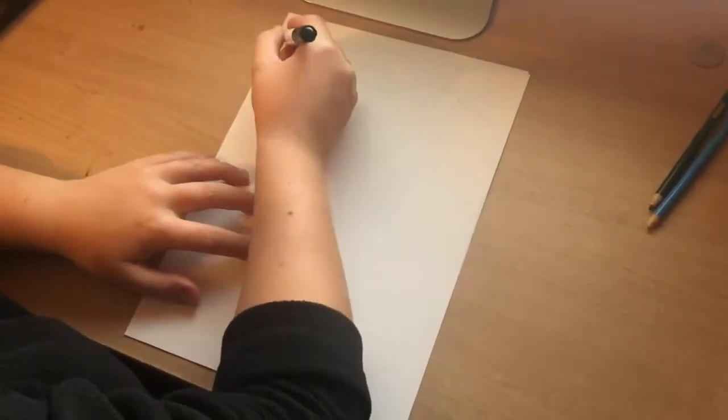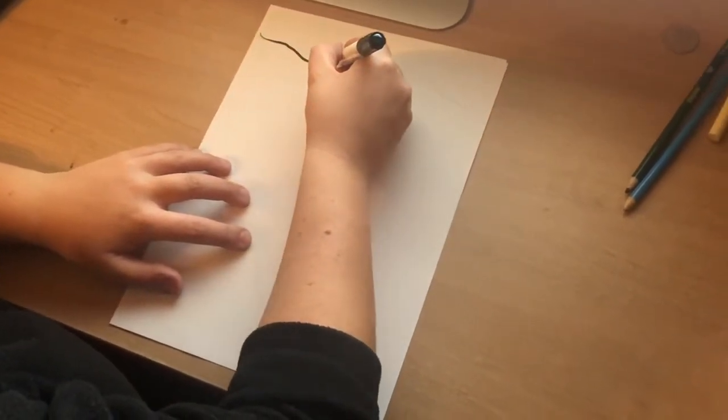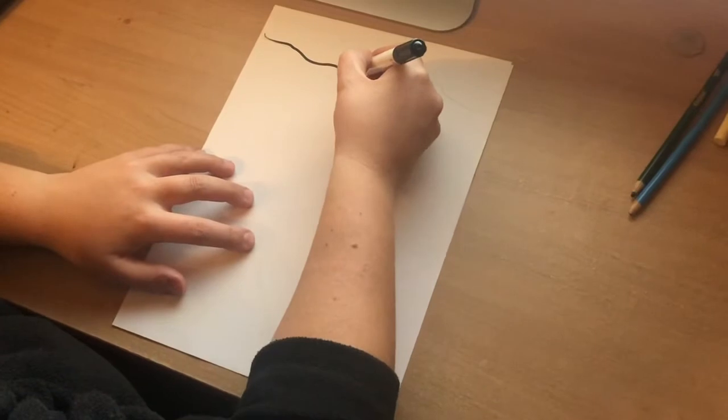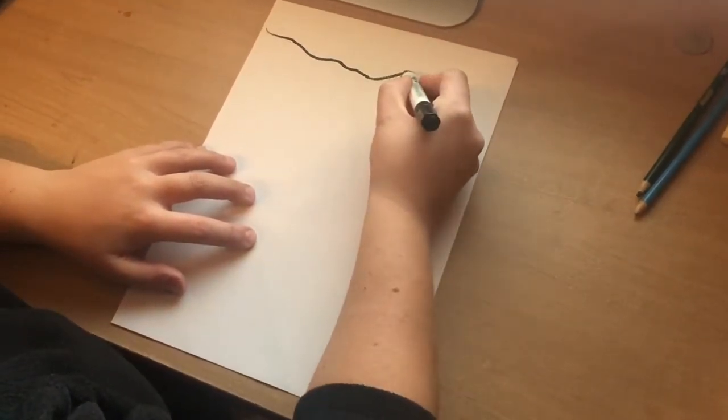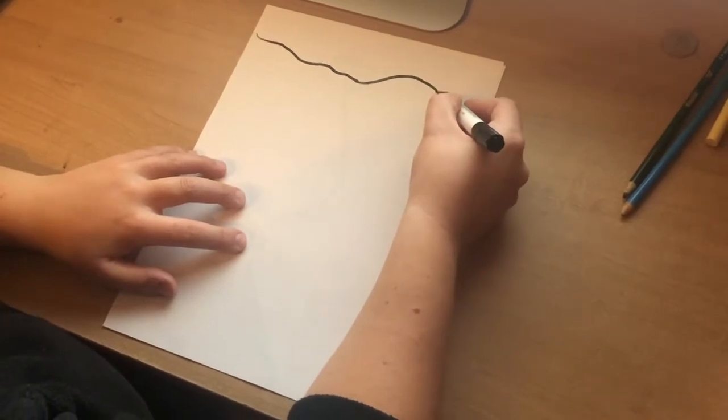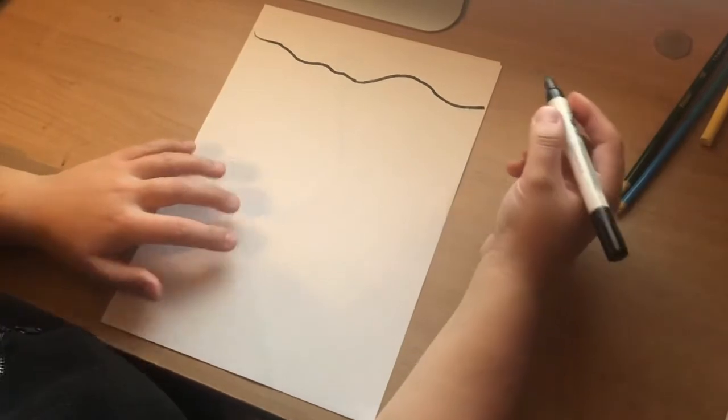So starting off right at the edge of Egypt, I'm going to bring my pen along, not creating a straight line as the coastline is very jagged, and it's going to come slightly up as we get over to the mouth of the Nile and then just coming down as we border into the next country.